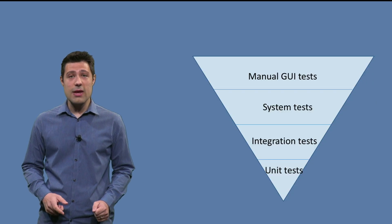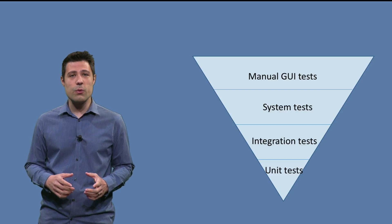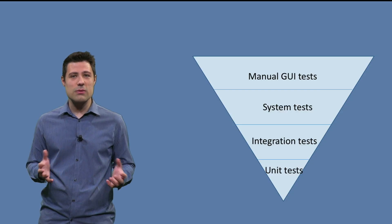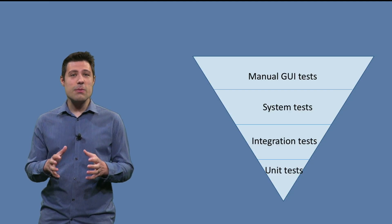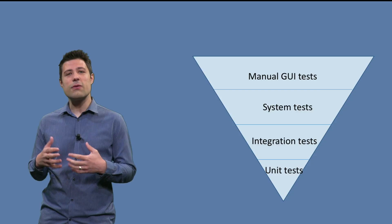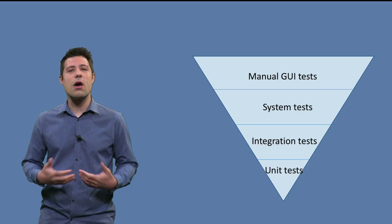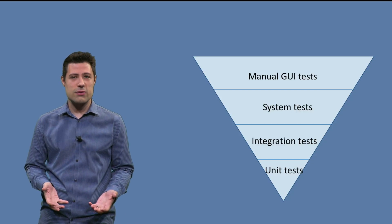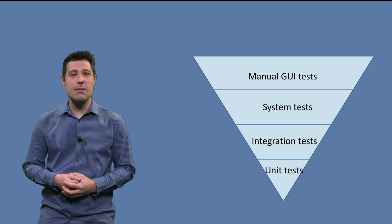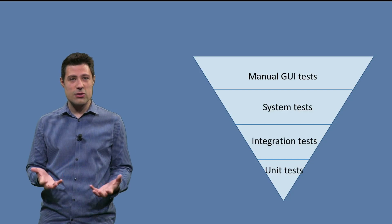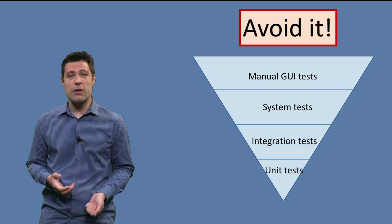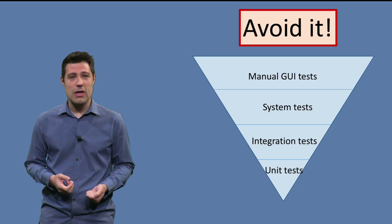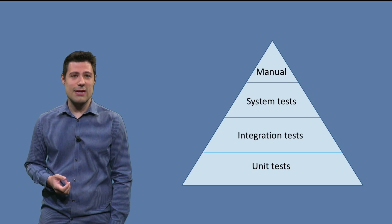However, one thing that we see in practice is people doing what we call the ice-cream cone test, which is the test pyramid but the other way around. They just do a small number of unit tests, a lot of system tests, and a lot of manual tests. But hopefully, by this point in the course, you already saw the advantages of automation — meaning you should avoid doing this ice-cream cone way of testing. You should focus more on the testing pyramid.